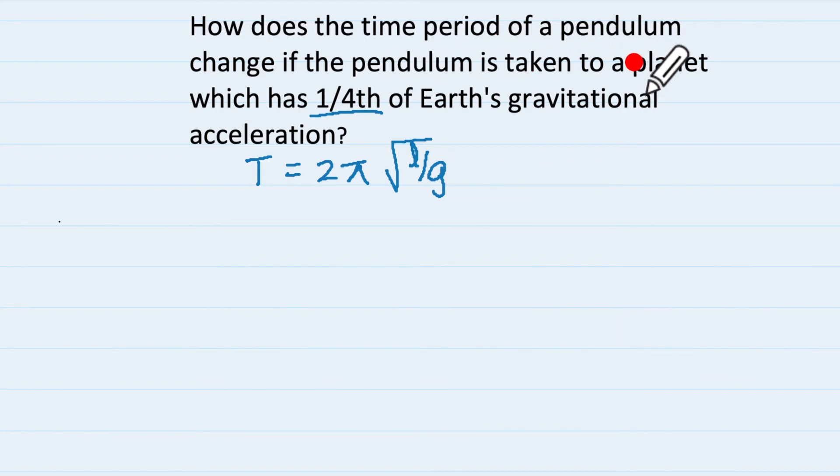Now what are they saying? That the pendulum is taken to the planet which means the length is not changing of that pendulum. And also 2 pi is not changing for the pendulum. So the time period is going to be proportional to 1 upon root of g or you can even say that time period is proportional to root of 1 upon g.